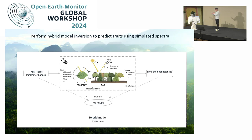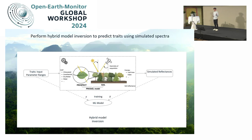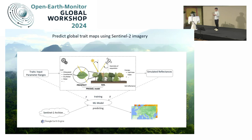Then you go the other way around. You use the simulated reflectances, and you use one of the defined traits as a label, and you apply any kind of machine learning model. This process is called hybrid model inversion — you use a machine learning model to invert the mechanistic model. You can then take this model and apply it to satellite data directly, obtaining global predictions.